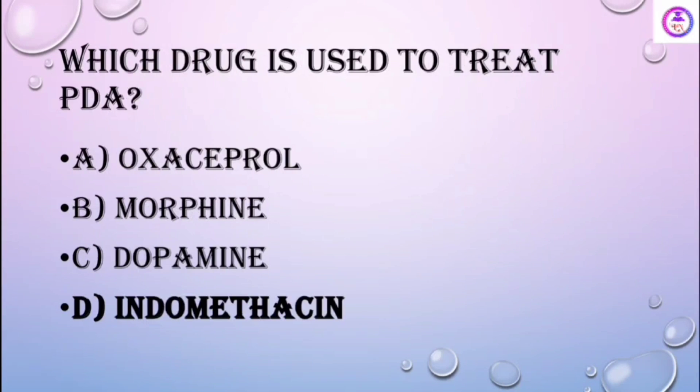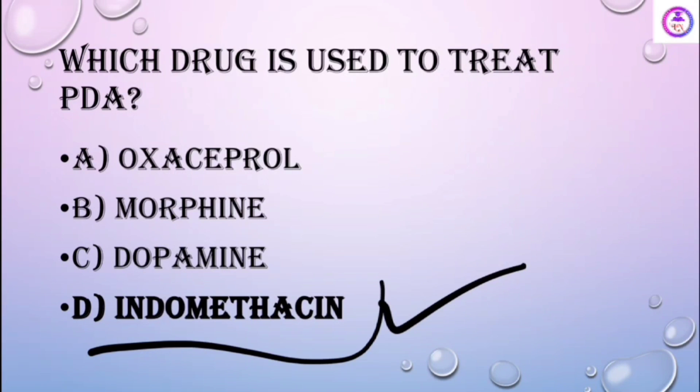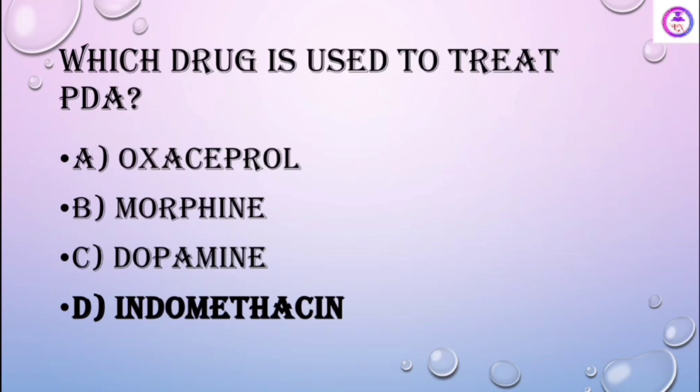Which drug is used to treat PDA (patent ductus arteriosus) using a prostaglandin synthetase inhibitor? The answer is indomethacin.